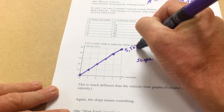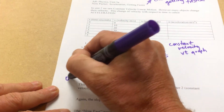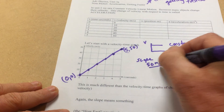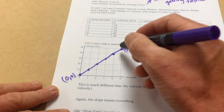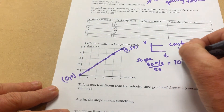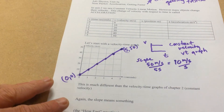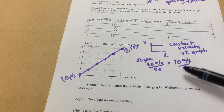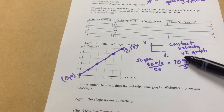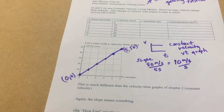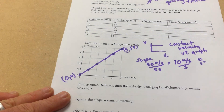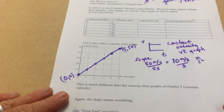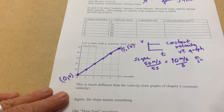We have the point five comma fifty and zero comma zero. Our slope is fifty minus zero over five minus zero seconds, which gives us 10 meters per second per second. Look at your units — meters per second with two time units in the denominator is really meters per second squared, and that's a hallmark of an accelerated idea: distance per time per time.